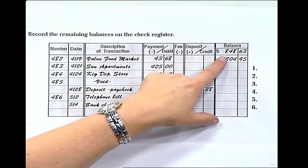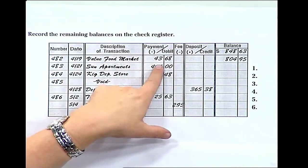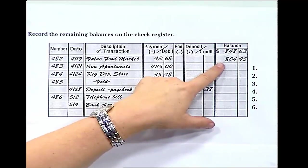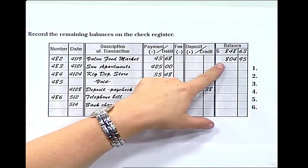So we'll take our balance, $848.63, and subtract the amount of the check that we have written. That gives us a current balance of $804.95.